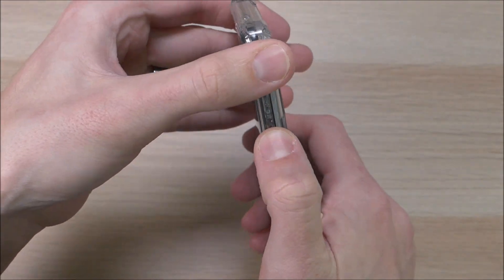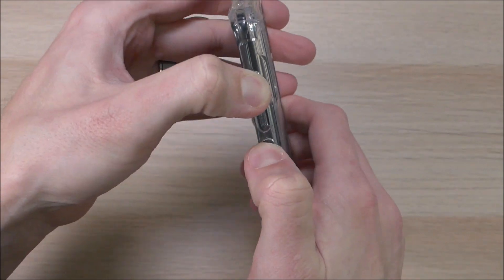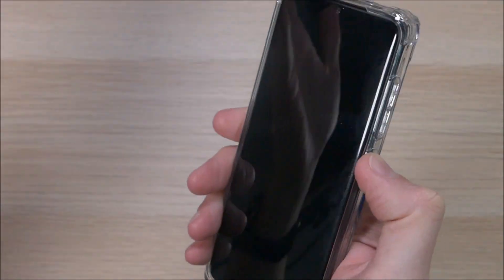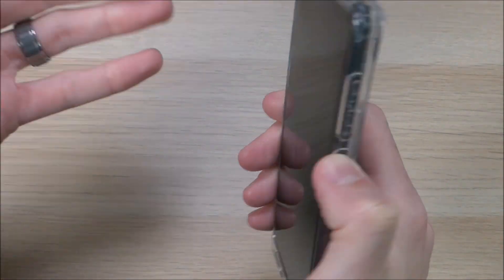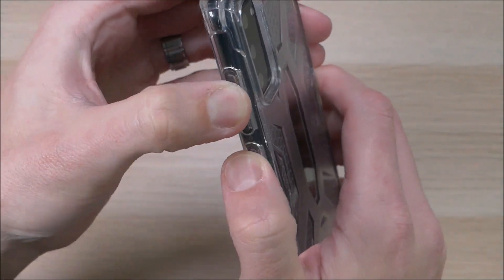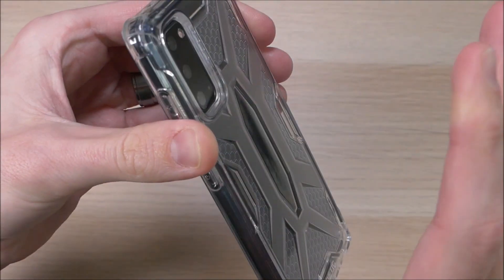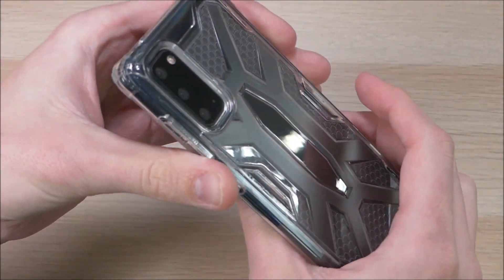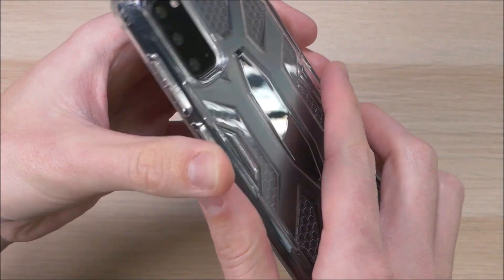Here on the sides we do have your power, your volume up and your volume down buttons and there's no issues using those. As I said earlier, this is a dummy device so we can't really turn it on. However I can tell you that they do maintain that natural clickiness, and having used this many times before, I have never had an issue with the buttons not working on an actual device.